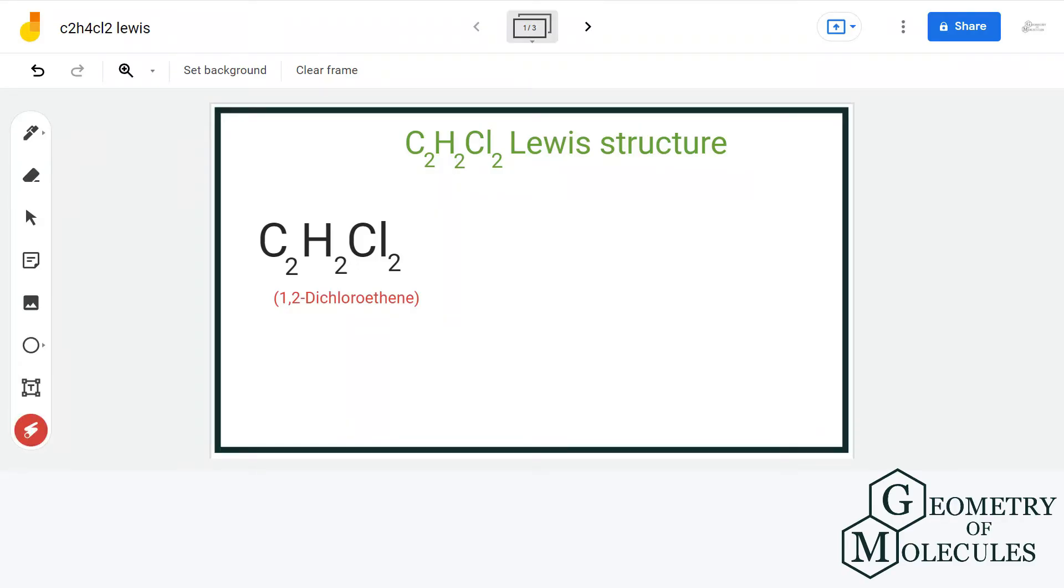Hello guys, welcome back to our channel. In this video, we will discuss the Lewis structure of C2H2Cl2, which is the chemical formula of 1,2-dichloroethene. For that, let us count up the total number of valence electrons.